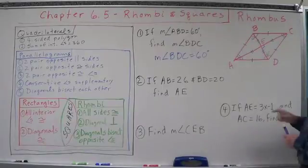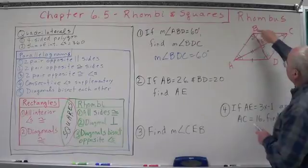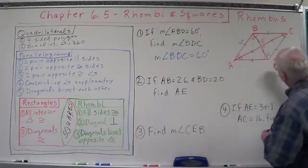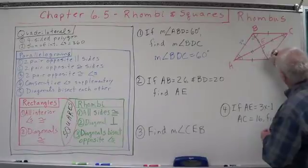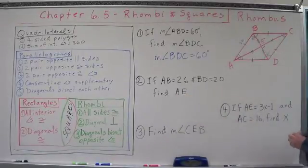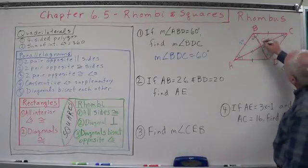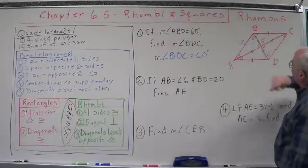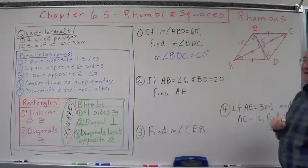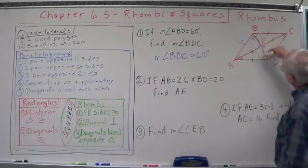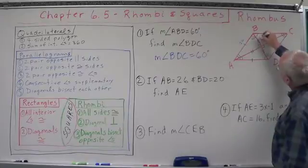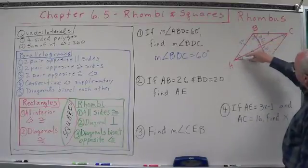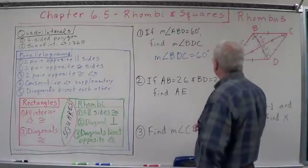If AB equals 26, saying this right here equals 26, and BD, the whole thing, equals 20. In other words, this whole thing right there is 20. Find out what AE is. We know this is a right angle, right? So, this is a right triangle. If we can know the hypotenuse and the leg of a right triangle, can we find the other leg? Yeah, I think Pythagorean theorem lets us do that. So if this whole thing is 20, we know that BE equals 10, and this is 10. We know what the hypotenuse is. We know what this leg is. We just need to set up the equation.